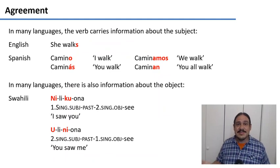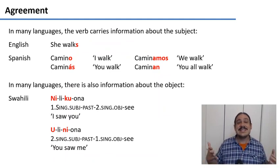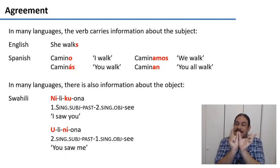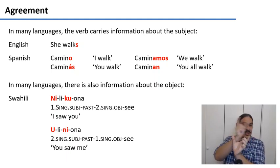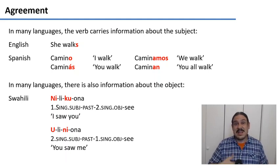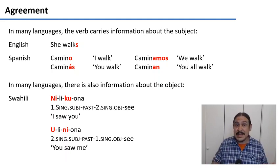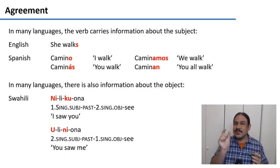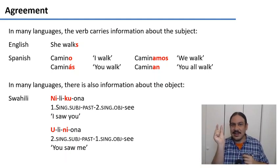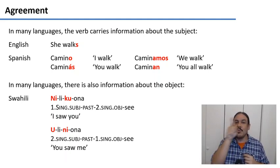Agreement might be familiar to you. In many languages, the verb carries information about who is doing the action. For example, in English, that little 's' tells you that whoever is doing the action is he, she, or singular they. In Spanish, the verbs camino, caminas, caminamos, caminan are the same verb, except there's a morpheme that tells you that I walk, that you walk, that we walk — so you have some info about who's doing the action.